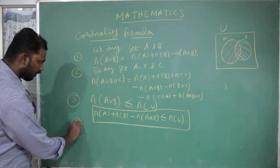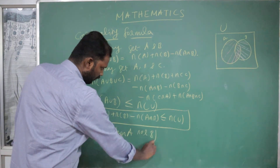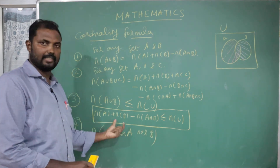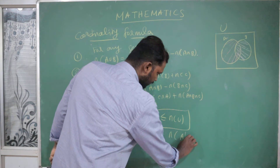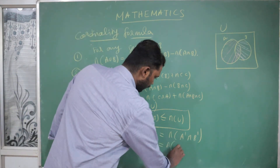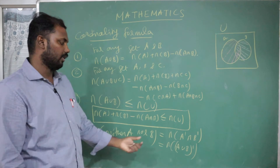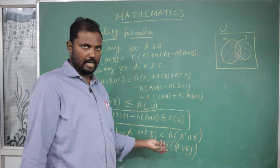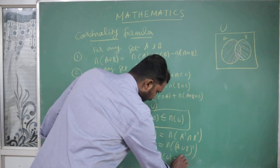The next part is N of neither A nor B. Neither A nor B equals N of A dash intersection B dash, which by De Morgan's law equals N of A union B whole dash. The complement of A equals U minus A, so the number of elements in the complement of A union B equals N of U minus N of A union B.